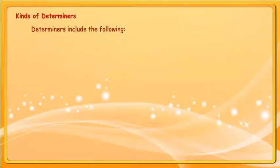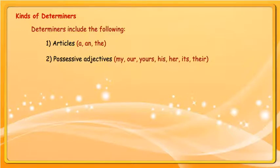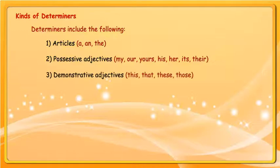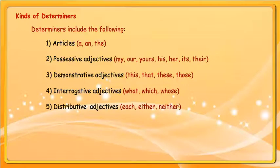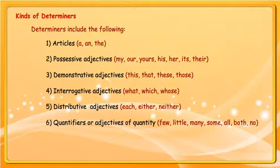Kinds of Determiners: Determiners include the following — Articles: a and the. Possessive adjectives: my, our, yours, his, her, its, their. Demonstrative adjectives: this, that, these, those. Interrogative adjectives: what, which, whose. Distributive adjectives: each, either, neither. Quantifiers or adjectives of quantity: few, little, many, some, all, both, no.